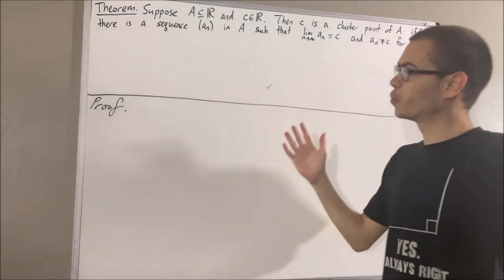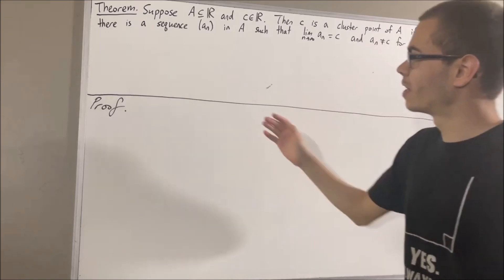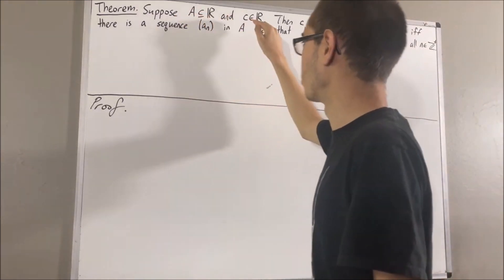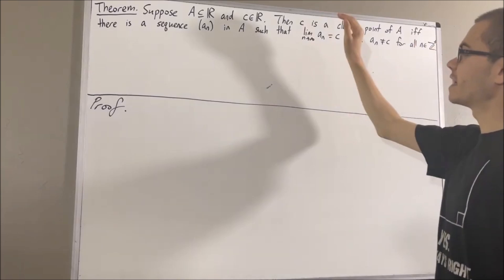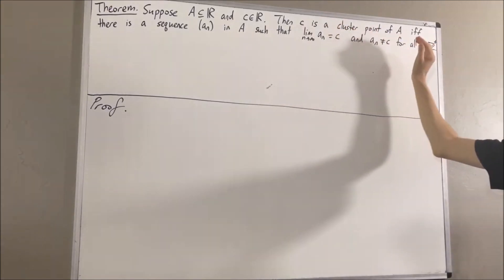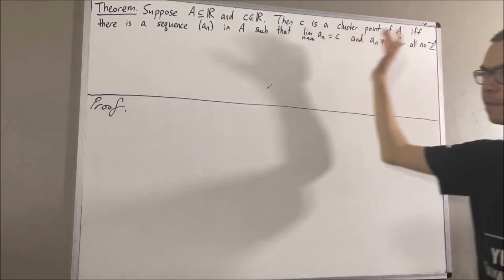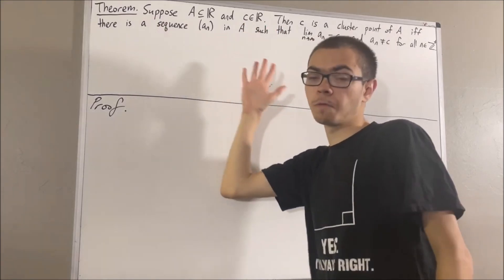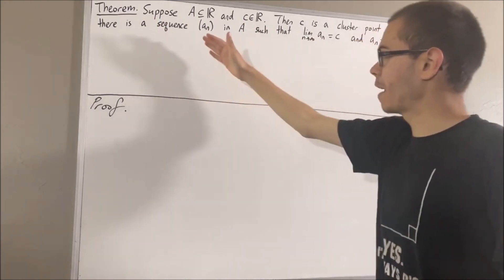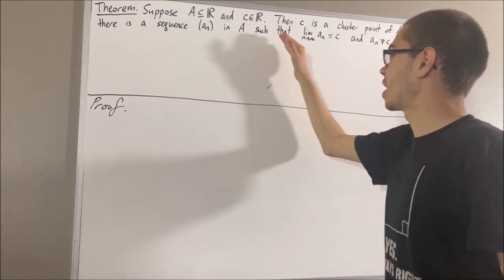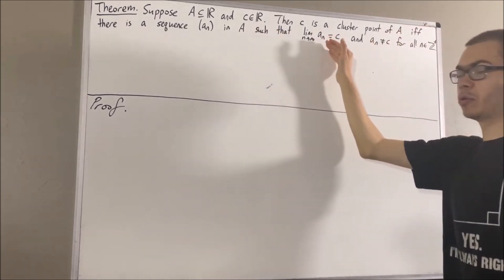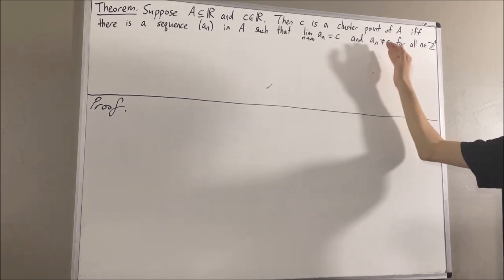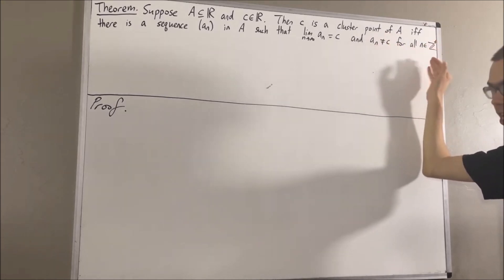In this video, we are going to prove the following theorem. Suppose A is a subset of real numbers and C is a real number. Then C is a cluster point of A if and only if there is a sequence A1, A2, A3, and so on of elements in A such that the limit of An is equal to C and An is not equal to C for all positive integers n.